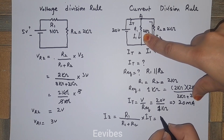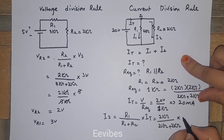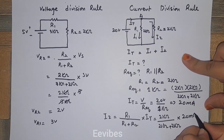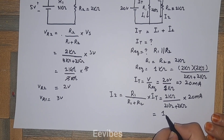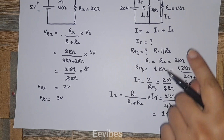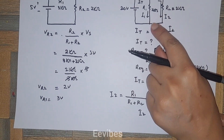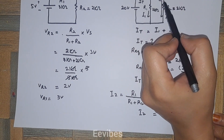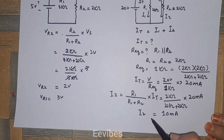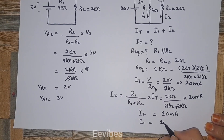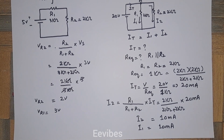We don't consider the resistance on which we are measuring the current; we take the opposite resistor. So R1 equals 2 kilo-ohms, divided by 2 kilo-ohms plus 2 kilo-ohms, multiplied by IT which is 20 milli-amperes. Simplifying, I2 equals 10 milli-amperes. Since both resistors are the same, I1 is also equal to 10 milli-amperes. If you have questions, drop them in the comment section — thank you for watching.